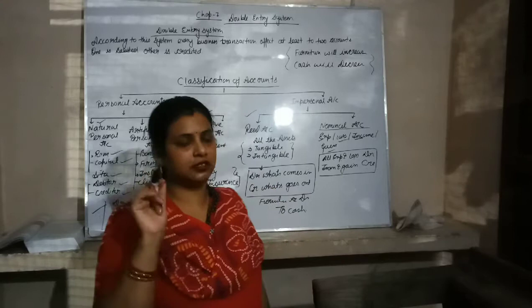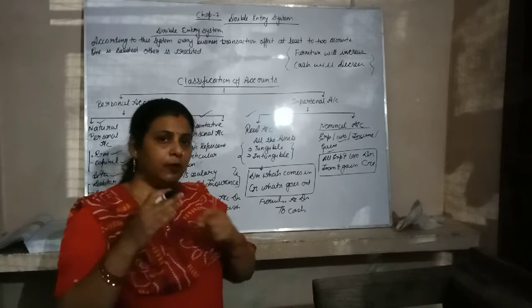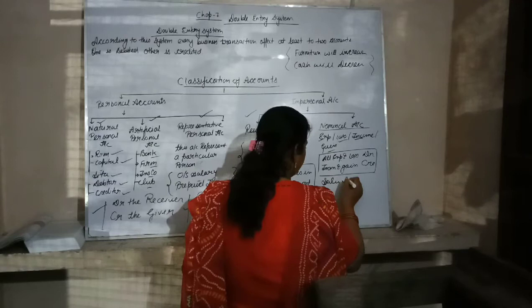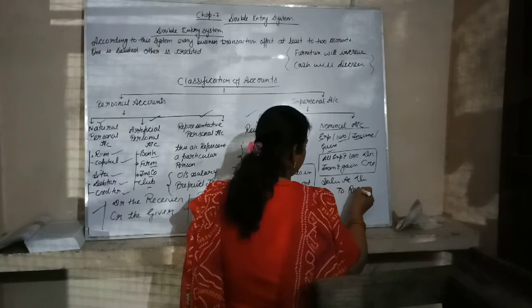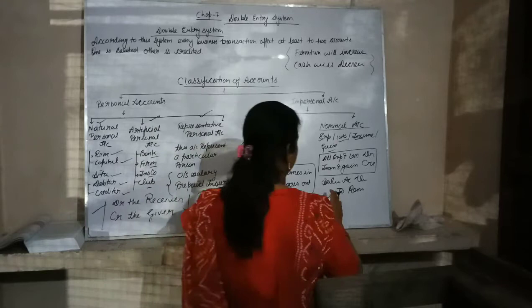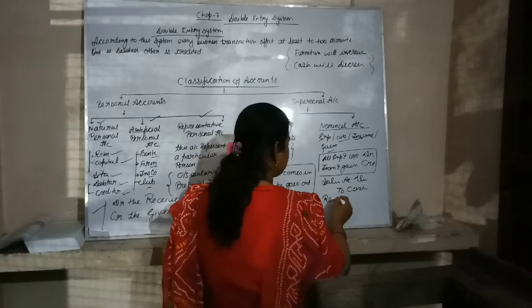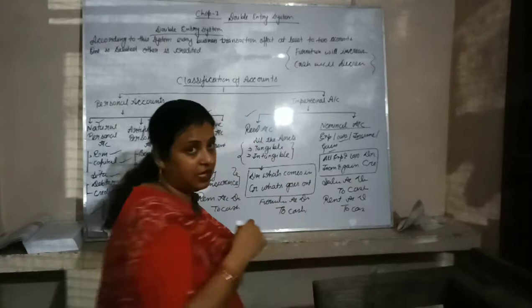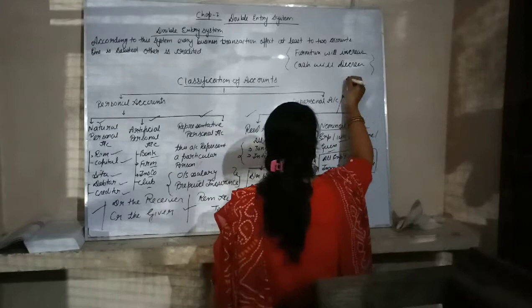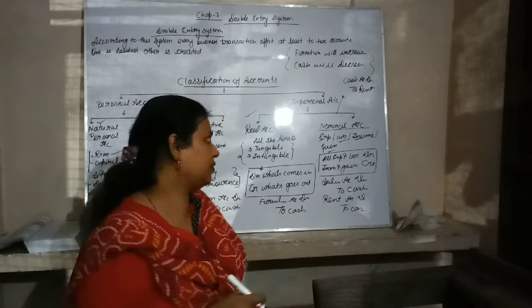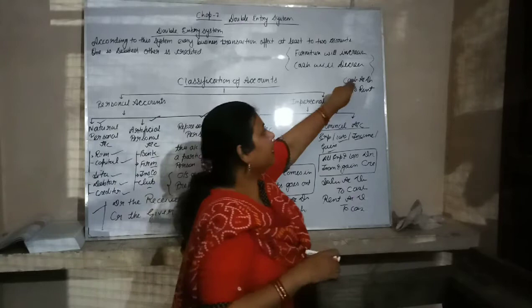For example, if a firm has given salary to their employees, salary is an expense for the firm, so salary account is debited to cash. Similarly, if we have given rent, rent is also an expense, so rent account is debited to cash. But if we have received rent, then rent is income for us. So we write: cash account is debited to rent, because income and gains are credited.